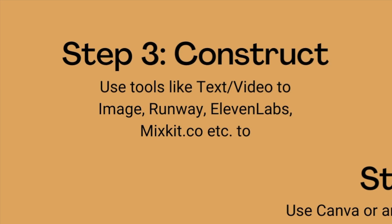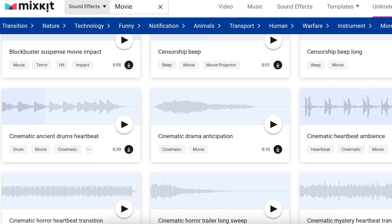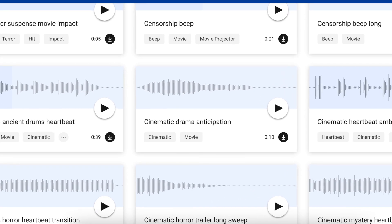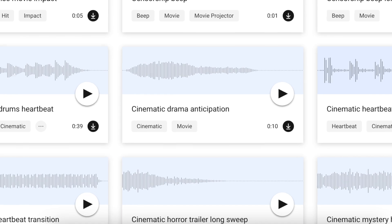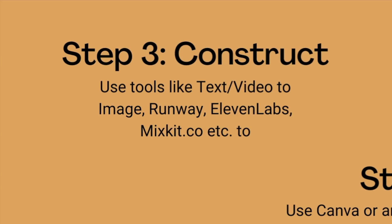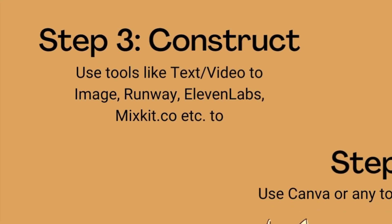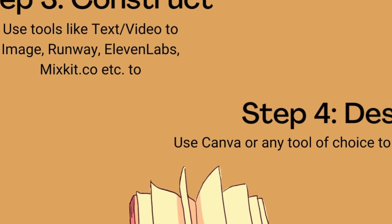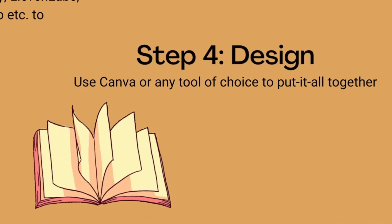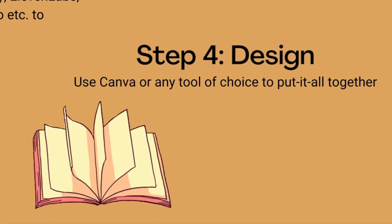When you go to mixkit.com, you'll get compelling cinematic music — movie-like music — so that your teaser comes alive when you use it in your design. You're just constructing and creating this small video so that you can take everything and jump to step number four, which is design.